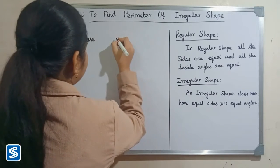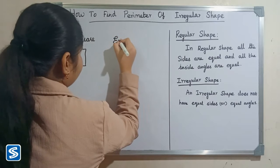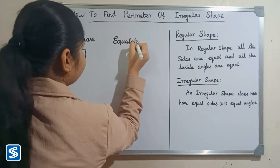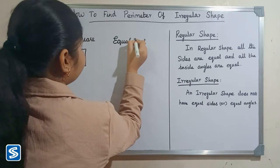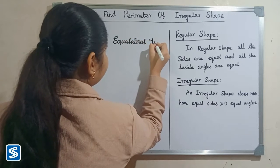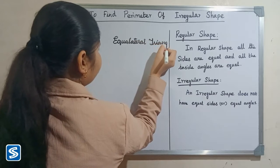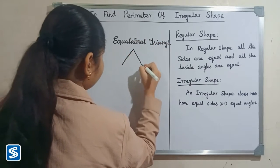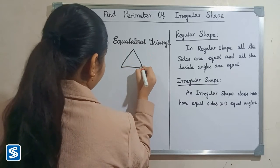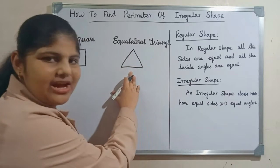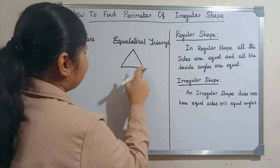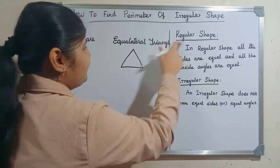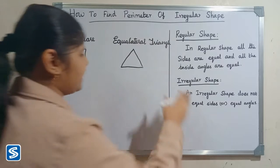The next example is an equilateral triangle. In an equilateral triangle, all the sides and angles are equal, so an equilateral triangle is a regular shape.